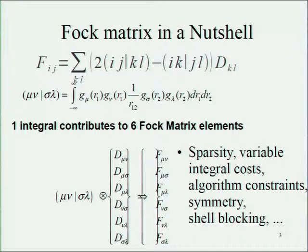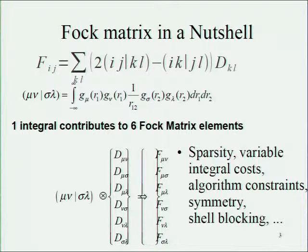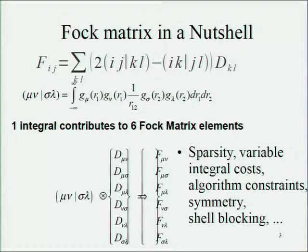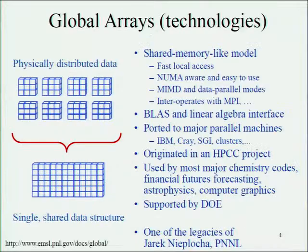The Hartree-Fock wave function is a quantum mechanical method for describing electronic systems. The key element was computation of the Fock matrix, which takes a density matrix and contracts it with integrals — four-index quantities that must be computed on the fly because there are so many of them. Because of symmetry, each integral gets contracted with six quantities, making contributions to six destinations. You end up, because of sparsity, with a very irregular computation.